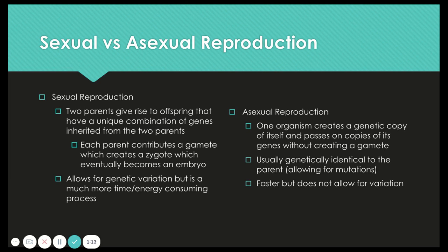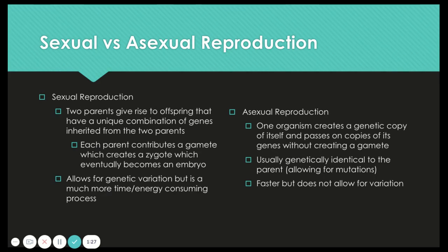Each parent contributes a gamete — so sperm and an egg — which creates a zygote. And that zygote eventually becomes an embryo. This is important because it allows for genetic variation, as we talked about in Unit 1, but it is much more time and energy consuming than asexual reproduction.